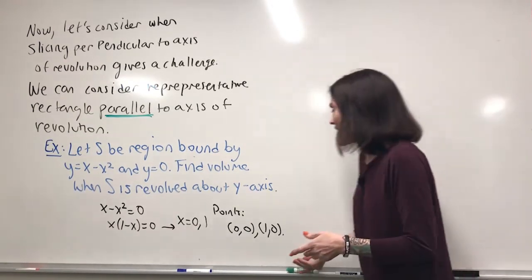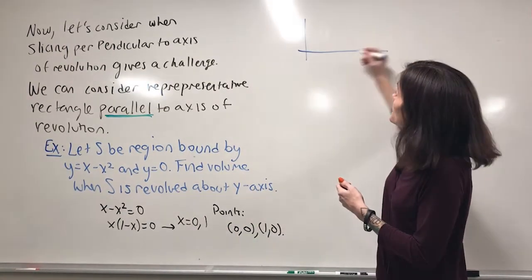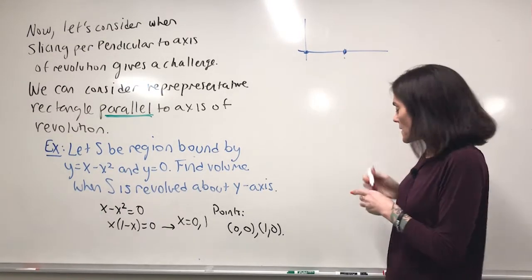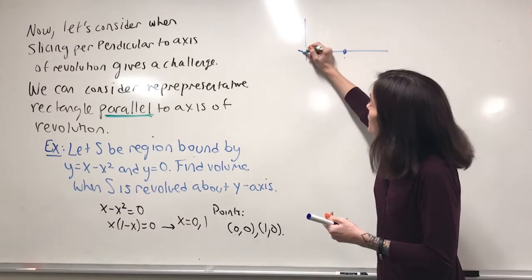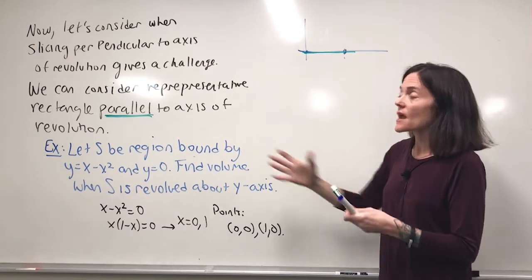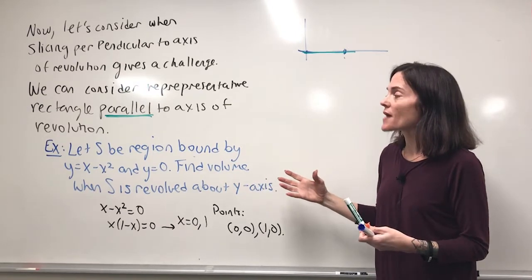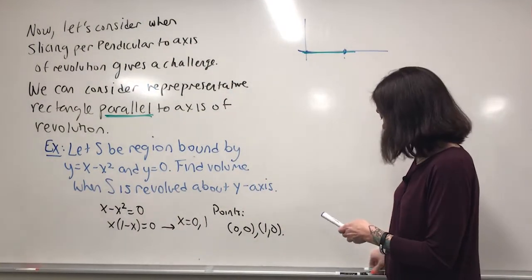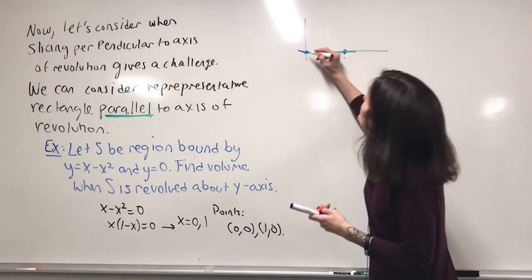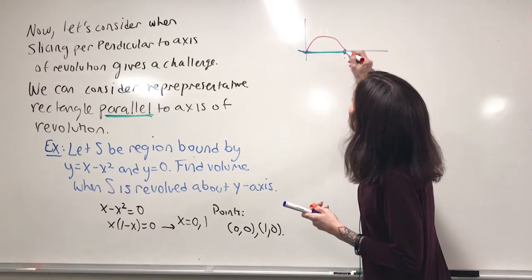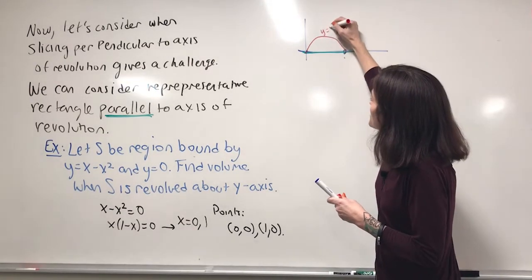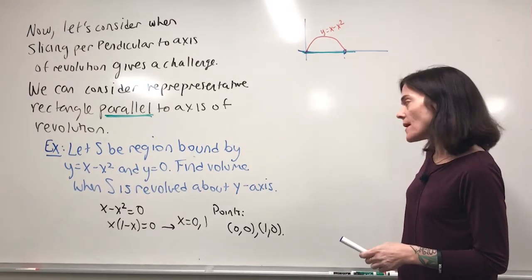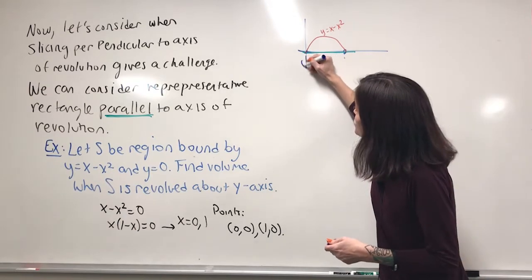Let's graph this. We have (0, 0) and (1, 0), and the line y = 0. The other curve, x minus x², is quadratic with a negative leading coefficient so it faces down, and we know it goes through these two points. So it's a downward-opening parabola — y = x − x². This is our region S, and we're revolving it about the y-axis.